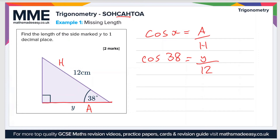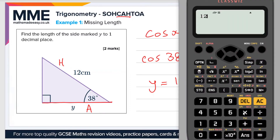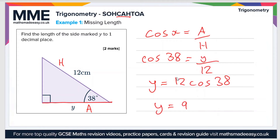To solve for y, we multiply both sides by 12, so y equals 12 cos 38. The question wants that to one decimal place, so let's put that into the calculator: 12 times cos 38. That gives us a value of 9.46, or to one decimal place, 9.5. So y equals 9.5 centimetres.